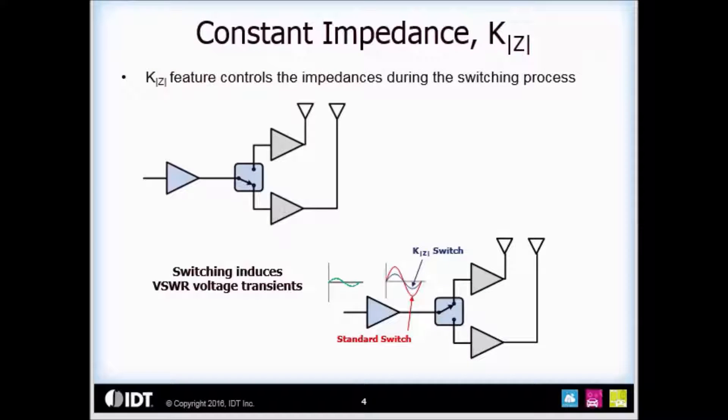Now I'd like to talk about constant impedance technology, or K|Z| for short. K|Z| controls the impedance during the RF switching process. The upper left drawing shows a simplified block diagram consisting of a driver amplifier connected to the switch input and an amplifier and antenna connected to each of the switch output paths. You can see the switch has the RF input connected to the lower RF output path.